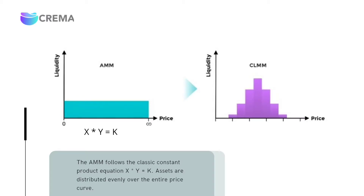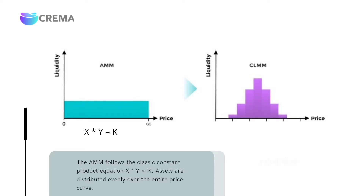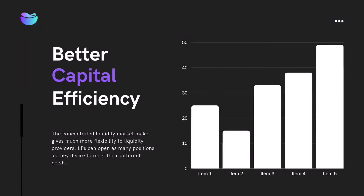However, with CLMM, a user's liquidity added in a specific price range is like an open position in a centralized exchange. A user's position only needs to contain enough assets X and Y to cover the price movement between the maximum and minimum of this position's price range. You could start enjoying better capital efficiency with Crema's pools.